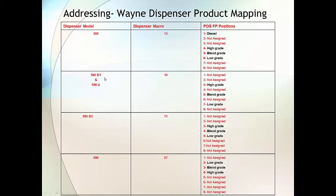So you can see how these differ. For the 580 and 590U, you can see in the third position you have the high grade. In the fifth position you have the blend, and seven is low. Again, if you were to not match that — for example, if we're doing the 580 and we were to put the high grade in any other position except for three, it would not work.